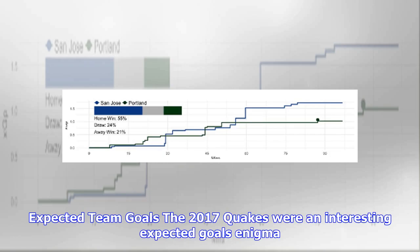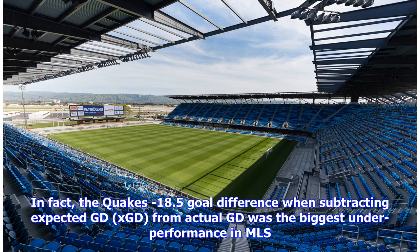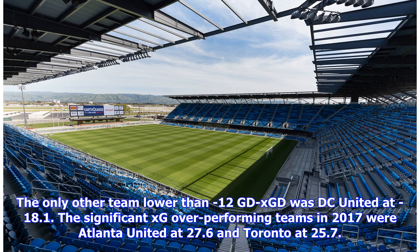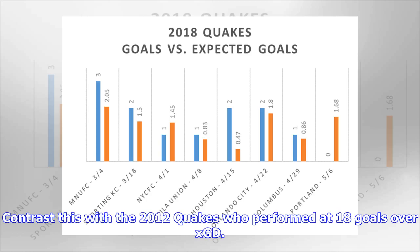The 2017 Quakes were an interesting expected goals enigma. Both offensively (39 GF vs. 46.6 xGF) and defensively (58 GA vs. 47.1 xGA), they underperformed against xG. In fact, the Quakes' minus 18.5 goal difference when subtracting expected GD (xGD) from actual GD was the biggest underperformance in MLS. The only other team lower than minus 12 GD-xGD was DC United at minus 18.1. The significant xG overperforming teams in 2017 were Atlanta United at 27.6 and Toronto at 25.7 — no other team was even close to them. Contrast this with the 2012 Quakes, who performed at 18 goals over xGD.